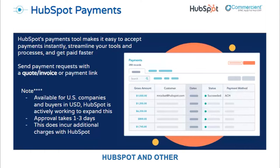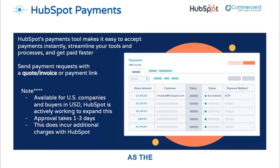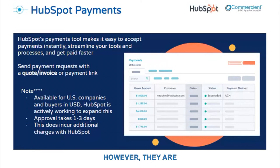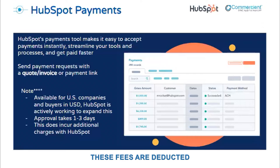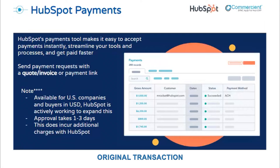To satisfy these regulations, HubSpot and other payment service providers are required to verify basic information about the business entity, its primary owners, and the individual who will serve as the authorized representative for the payments account. There are additional costs associated with the collection of money through HubSpot payments, but they are perfectly in line with industry standards. For ACH transactions, you pay 0.5% of the transaction amount, capped at $10. For credit card transactions, a 2.9% fee is applied. These fees are deducted from each transaction when it is made, and in the case of a refund, the fee for the original transaction is not refunded to you.